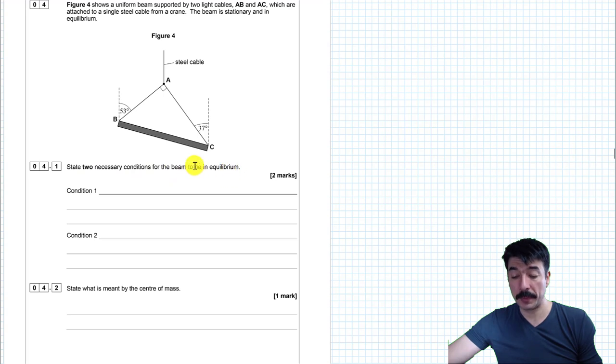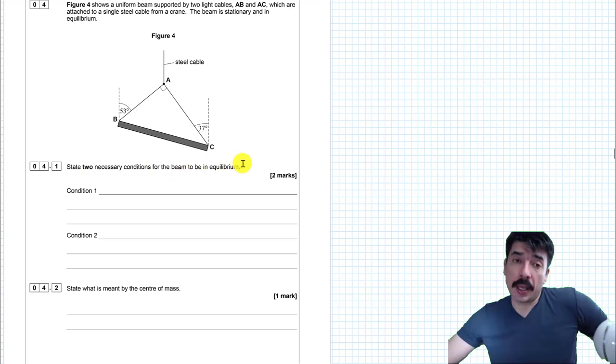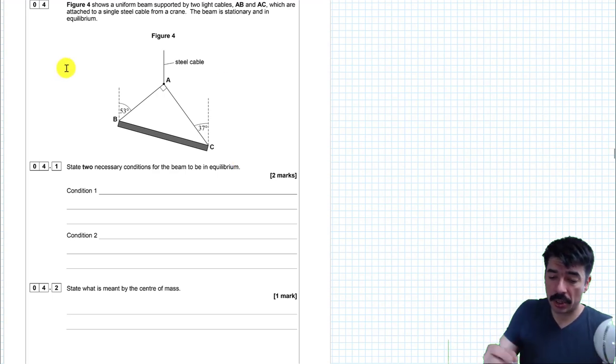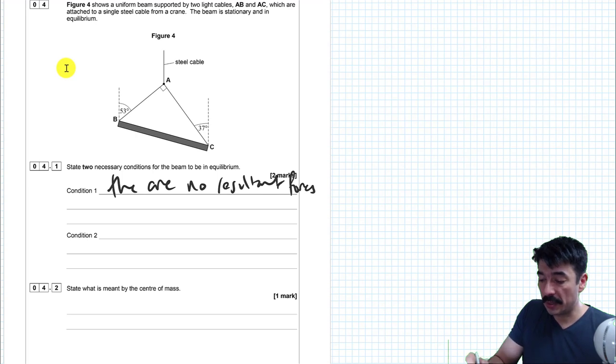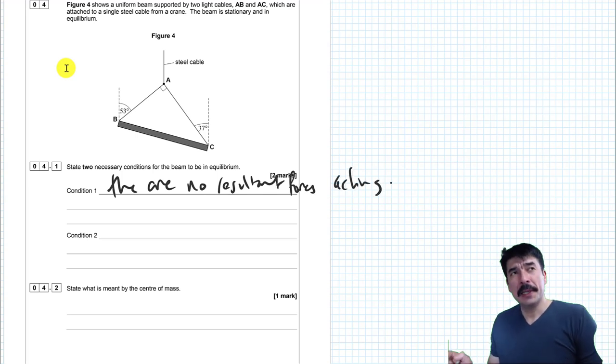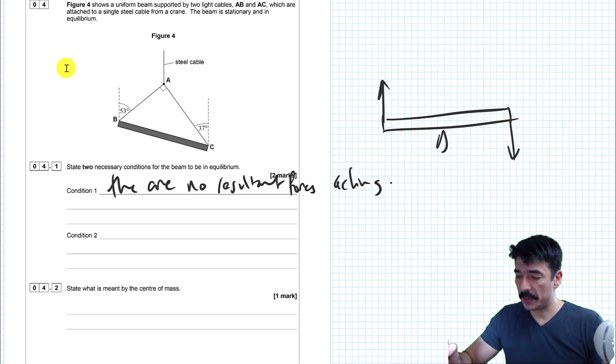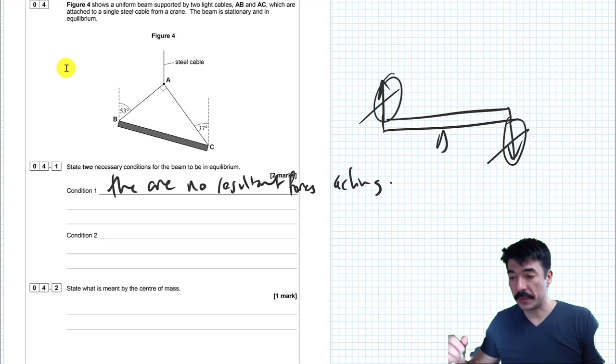State two necessary conditions for the beam to be in equilibrium. This is two free marks. All you need to do is remember the conditions for equilibrium. Condition number one is that there are no resultant forces acting. So what does that actually mean? If you've got an object like this and it's balanced, you have a force up and a force down. This actually does meet this condition if these forces are equal in magnitude, because they're going to cancel each other out.